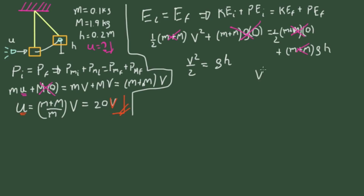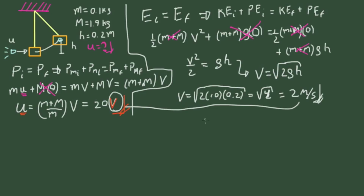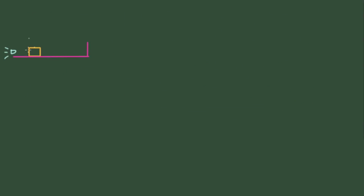From that equation, v = √(2gh). Using g = 10 m/s², v = √(2 × 10 × 0.2) = √4 = 2 m/s. Since u = 20 × v, u = 20 × 2 = 40 meters per second. This is the final answer — just by measuring the masses and the maximum height of the pendulum, you were able to determine the bullet speed.